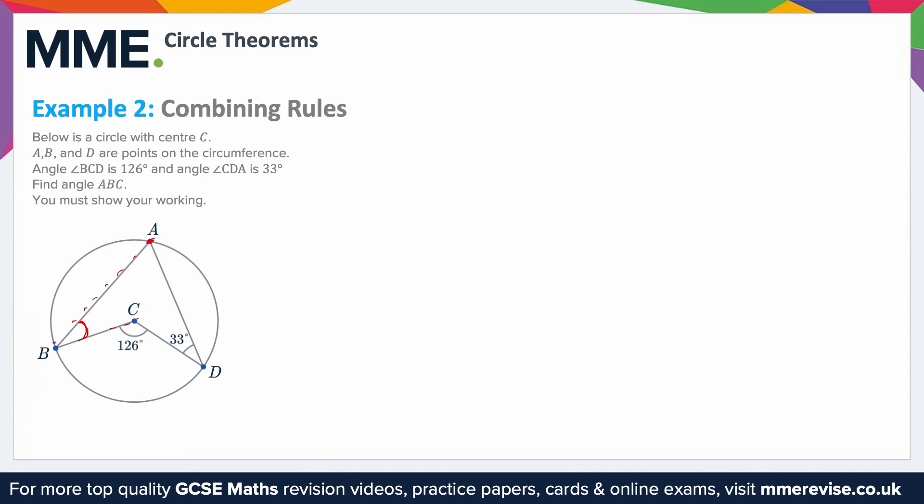So that's the one we're looking for. The first circle theorem that we can apply here is rule three: the angle at the center is twice the angle at the circumference. What that means is this angle is half of this angle, so 126 divided by 2 is 63 degrees.